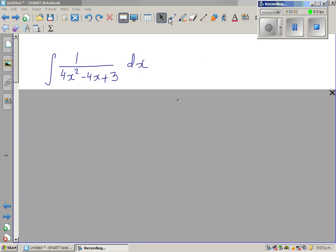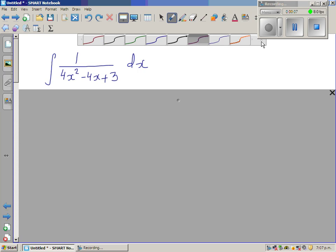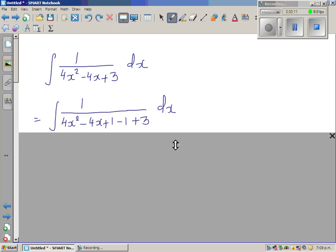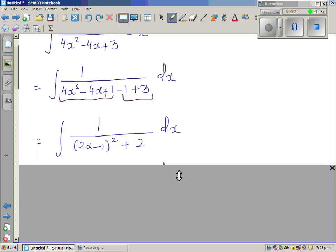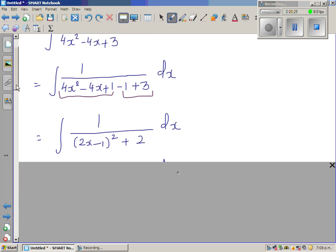Integrate 1 over 4x squared minus 4x plus 3 dx. Now the first step, what I've done is I've made a perfect square. I hope you can see the steps. So this is a perfect square and this I'm going to make a perfect square. So this is the next step which should be easy.